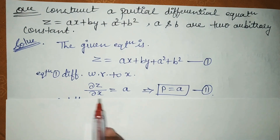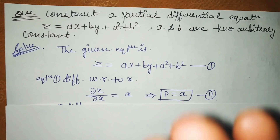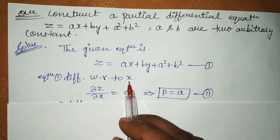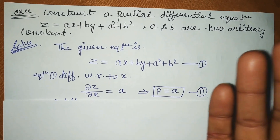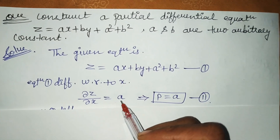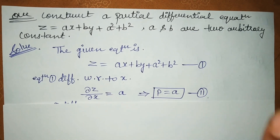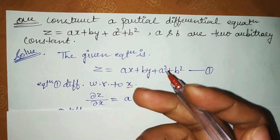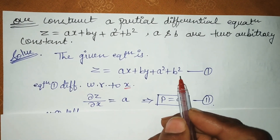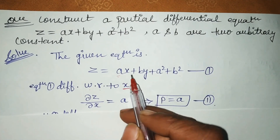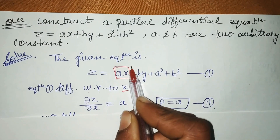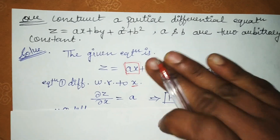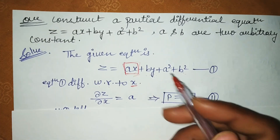When we differentiate with respect to x, only the term containing x will be differentiated; the remaining terms will be treated as 0 because they are treated as constant. So only the x term will be differentiated — the other two terms will become 0. Only the term with an x factor will be differentiated.